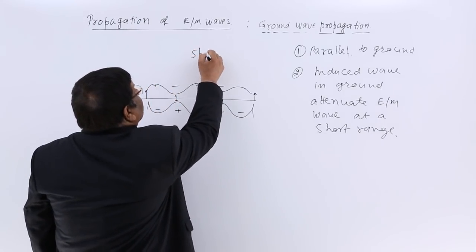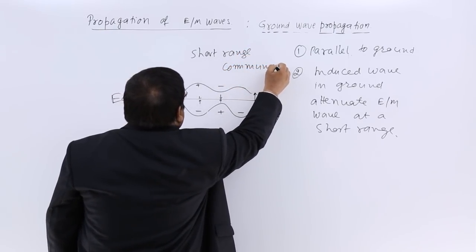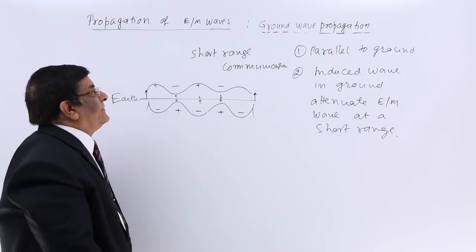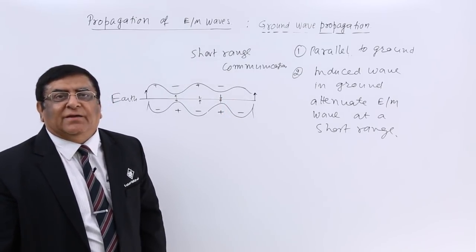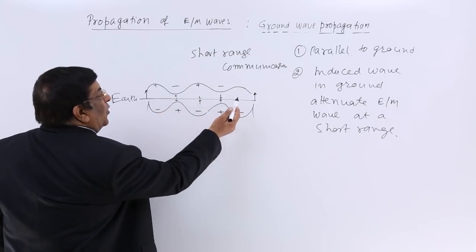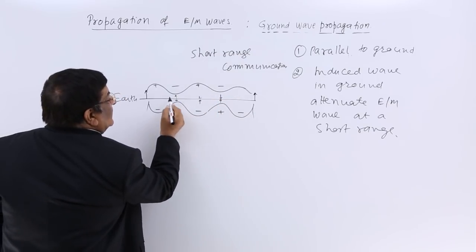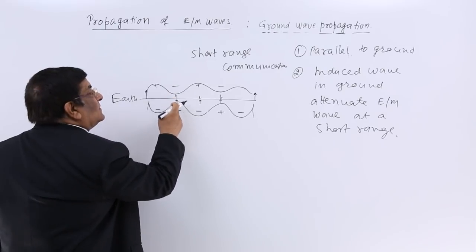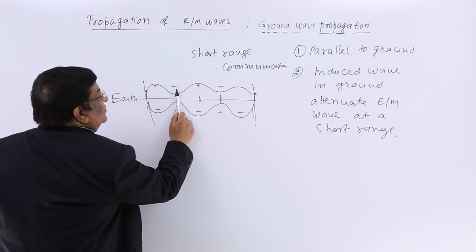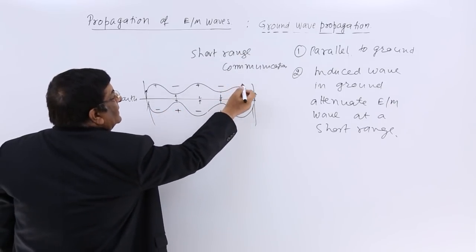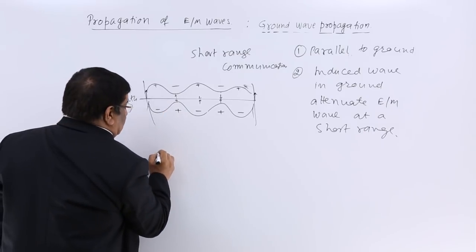Another feature is that the frequency used has to be kept small. If the frequency is small, the wavelength is very large, and there are fewer chances of short circuiting per unit distance. For a low frequency wave, there may be 5 chances of short circuiting over a given distance.